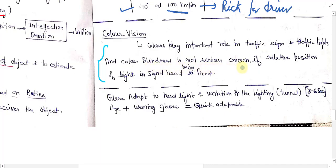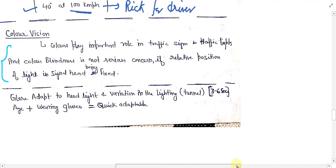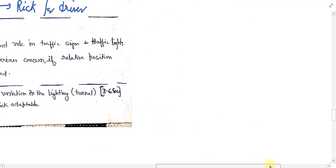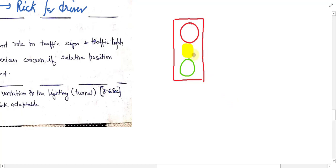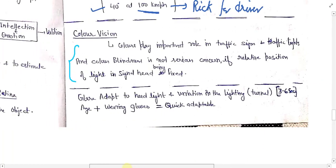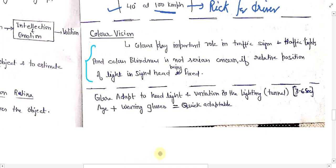Color plays an important role in traffic signs and traffic lights. Color blindness is not a serious concern if the relative positions of lights and signs have been fixed — for example, the top position of a signal is always red, and on the basis of position a color-blind driver is able to manage this disability.